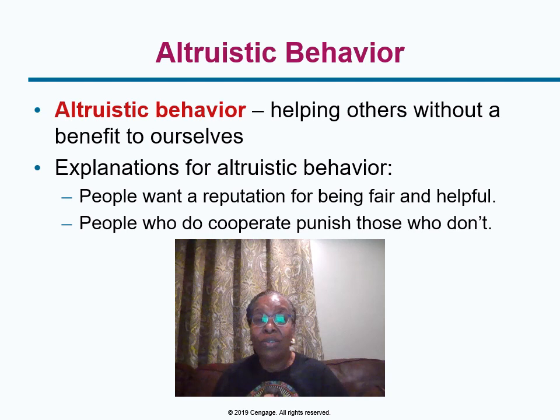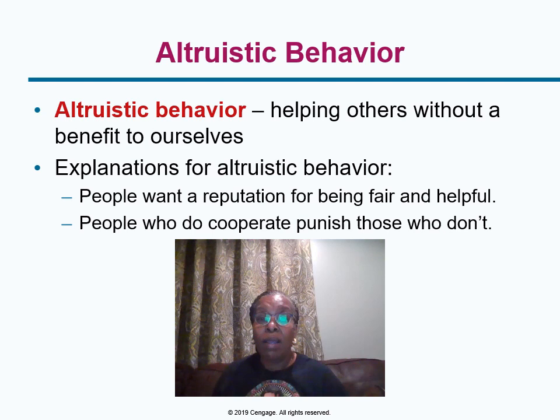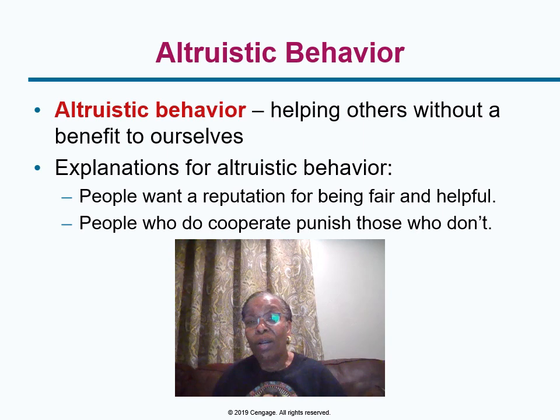One explanation for altruistic behaviors is that cooperating helps to build a reputation — people will start to look toward you and look up to you. This reputation requires individuals to be able to recognize other people. There's another explanation: people might cooperate to punish those who do not. This type of retaliation requires recognizing who failed to cooperate with others.